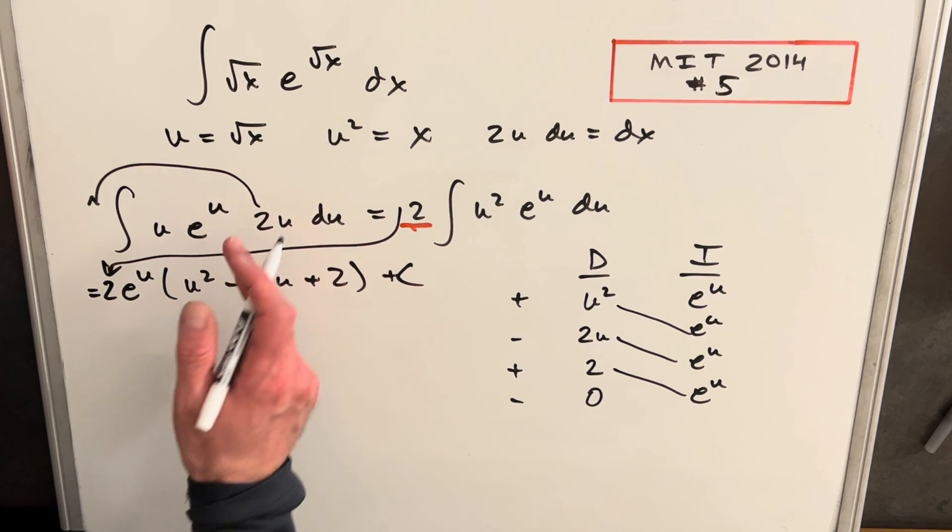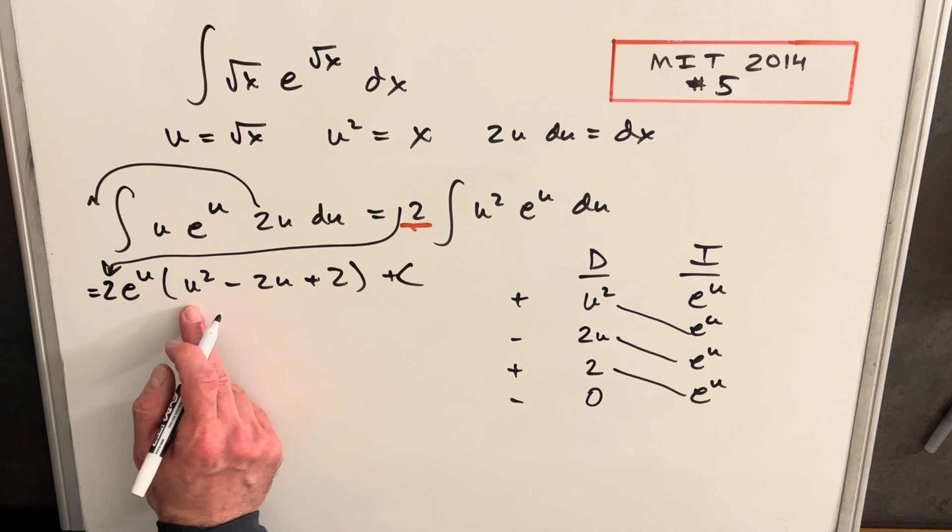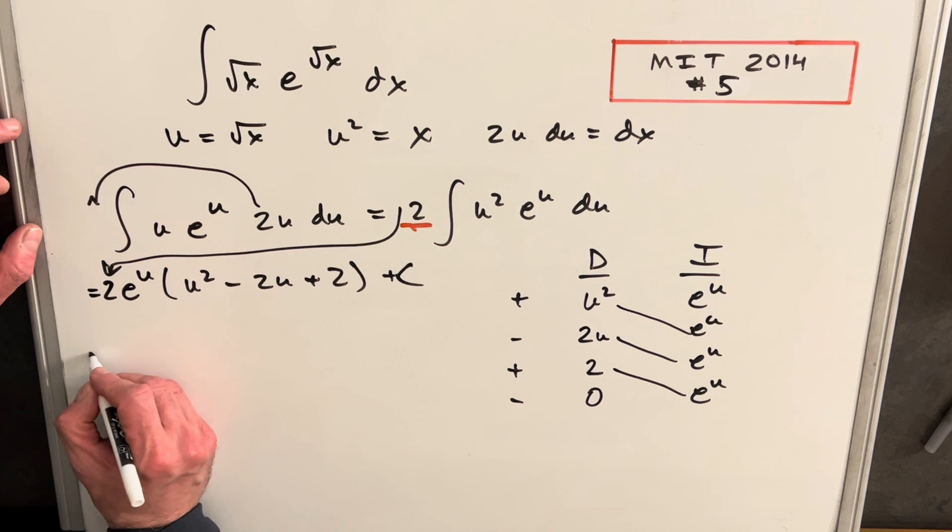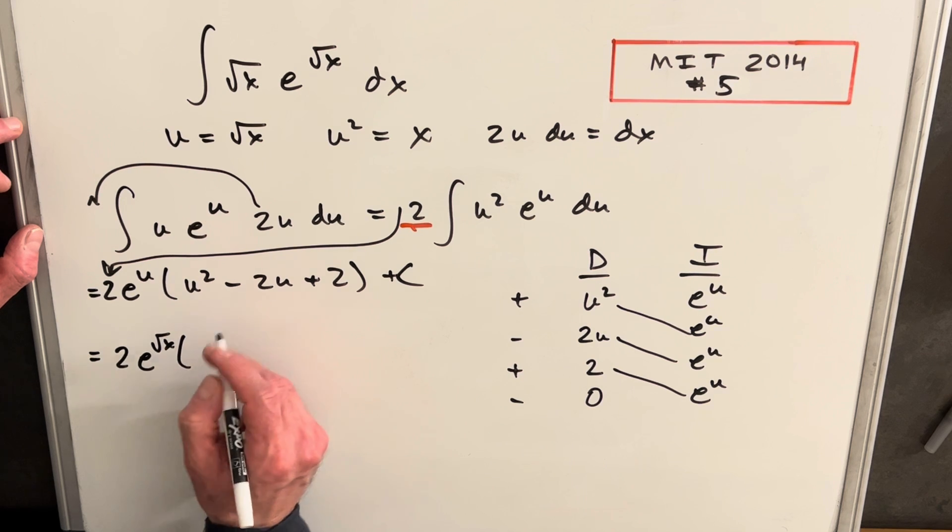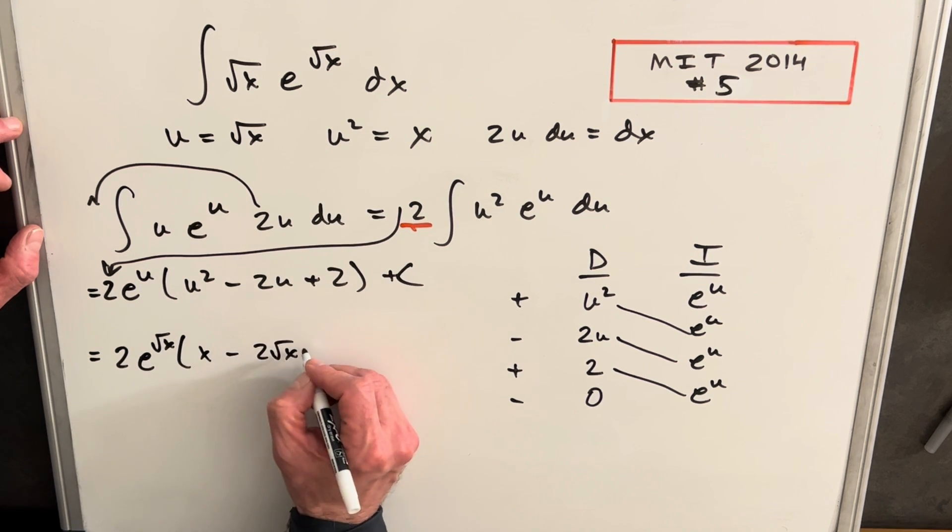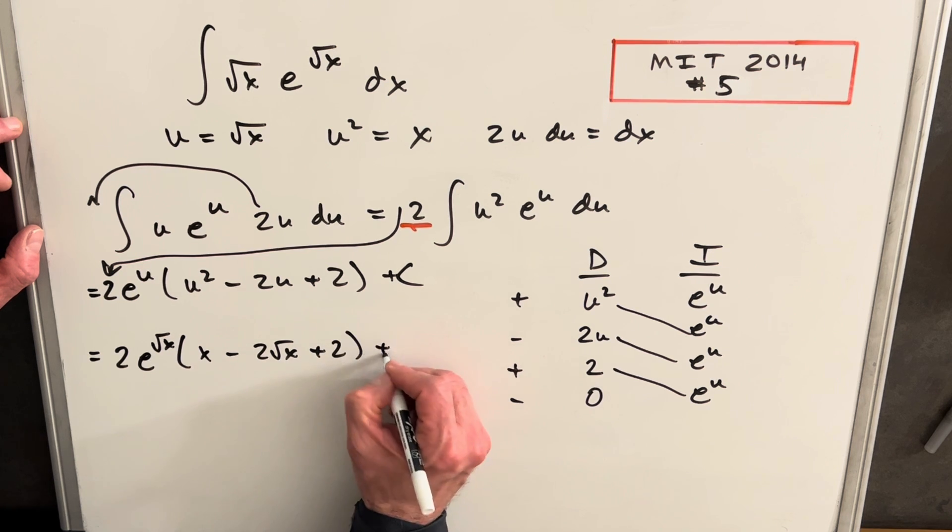And then now we can back substitute. We know our u is square root of x, but our u squared is going to be x. So to finish this off, we're going to have 2e square root of x times x minus 2 square root of x plus 2 plus c. And we're done.